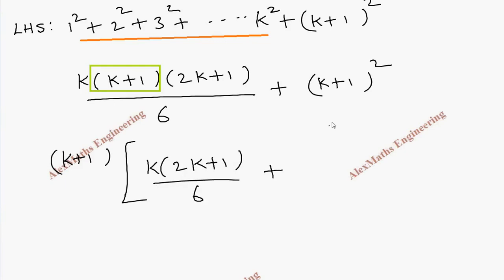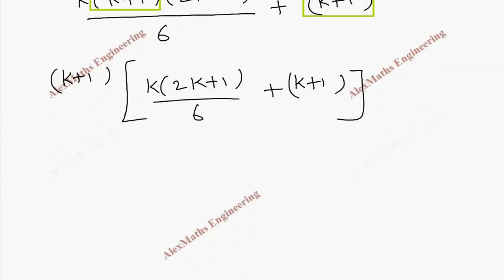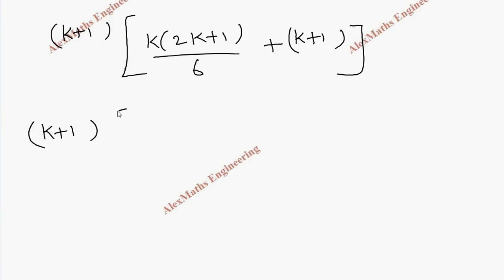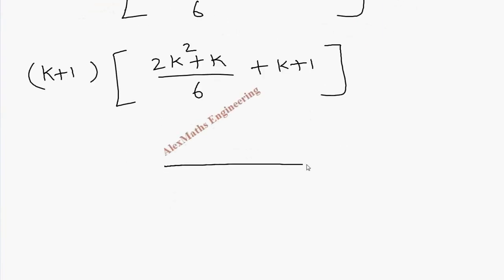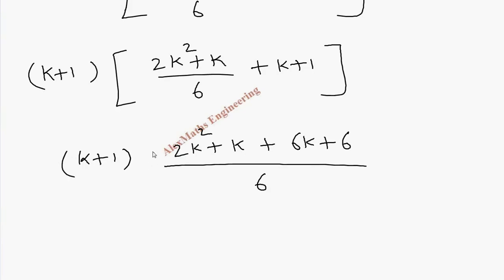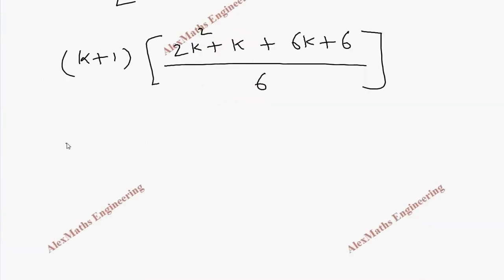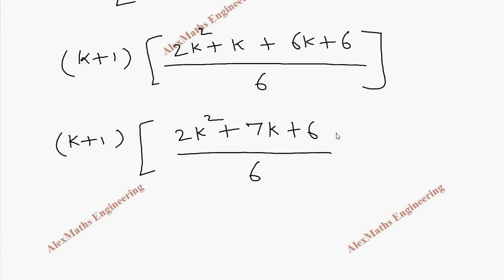Taking (k+1) as common, the remaining terms are k(2k+1)/6 from the first part and (k+1) from the second part. Taking LCM of 6, we get (k+1) times [k(2k+1) + 6(k+1)] all divided by 6, which expands to (k+1) times [2k² + k + 6k + 6] divided by 6, giving (k+1)(2k² + 7k + 6) divided by 6.